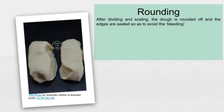The next word is rounding. After dividing and scaling, the dough is rounded off and the edges are sealed. As shown in the picture, the open ends, if kept like that, will result in expulsion of air, which is also termed as bleeding. So, to avoid bleeding, this rounding is done. It also helps to give proper shape to the final product.